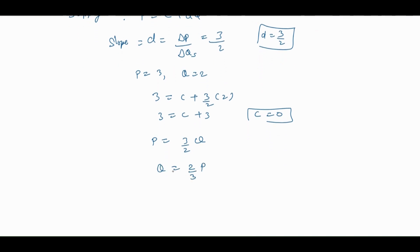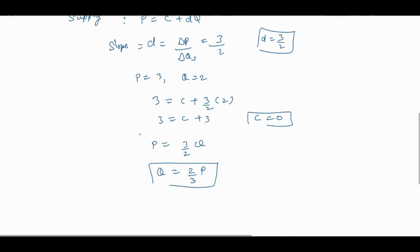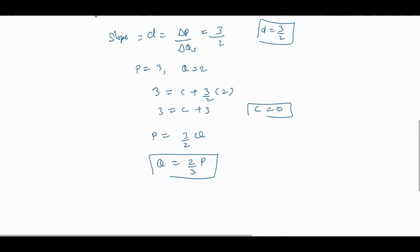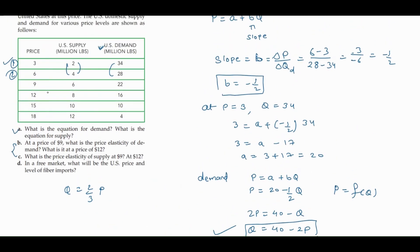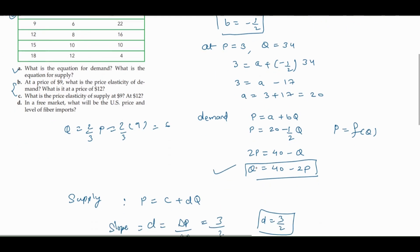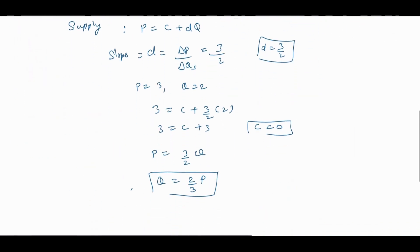We can also write this as q equals (2/3)p. Let me verify this equation using a third data point. If we put p equals 9: q equals (2/3) times 9, which gives 6. That matches the data point, so you can verify both equations using any point from the data set.